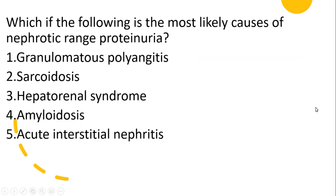Here is another MRCP style question — read it carefully. This is an easy question. From the given options, nephrotic range proteinuria is caused by amyloidosis. Amyloidosis is another important topic for your MRCP, so please prepare this topic very thoroughly.